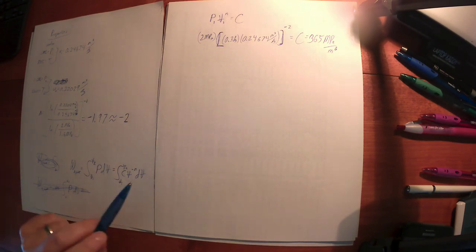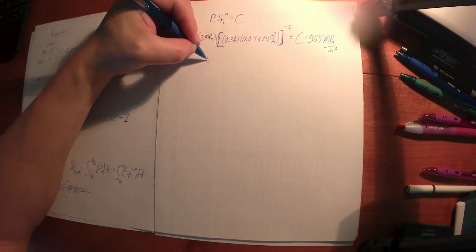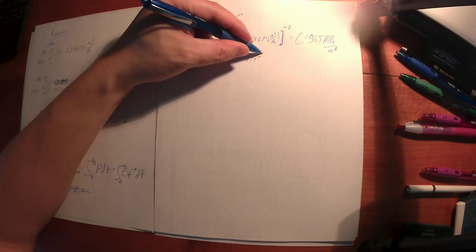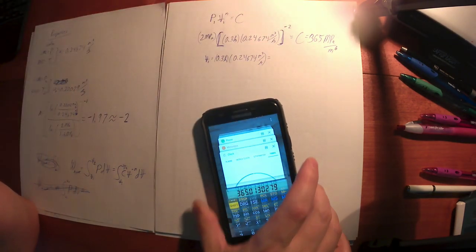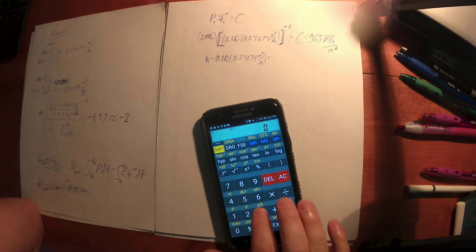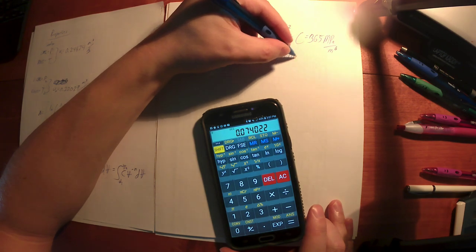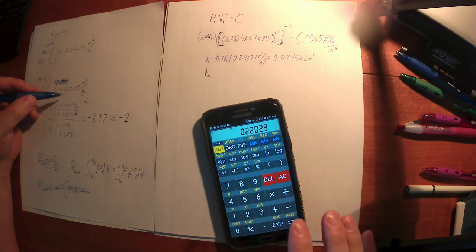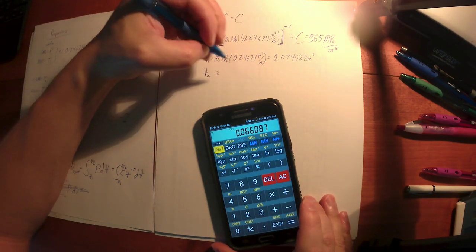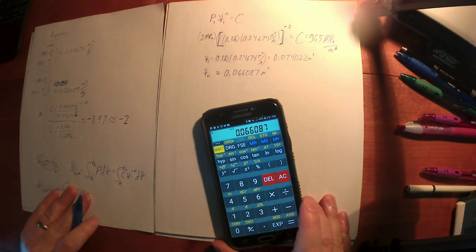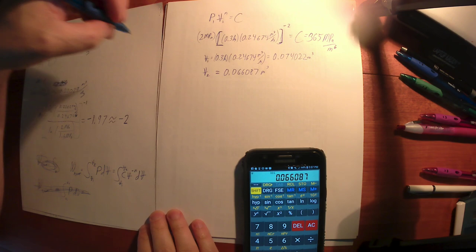So again, what are we trying to do? Well, I know now n is minus 2, and I know now the C value. I can find these two volumes. So let's just find those. Let's actually put a number on those. 0.3 kilograms times 0.24674 meters cubed per kilogram. That is 0.074022 meters cubed. That's V1. V2 is going to be 0.22029 multiplied by 0.3. So by the same logic, total volume 2 is going to be 0.066087 meters cubed. I've got both volumes. So now it's just some calculus.